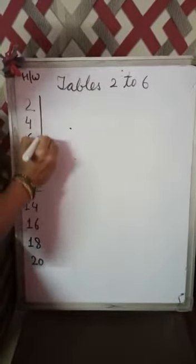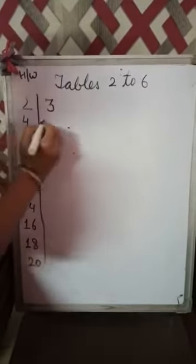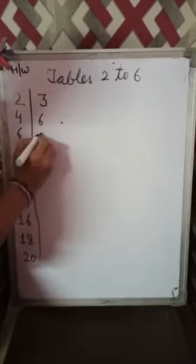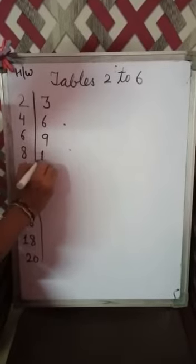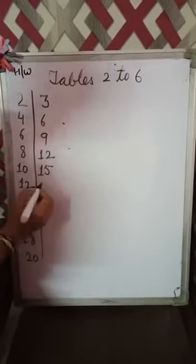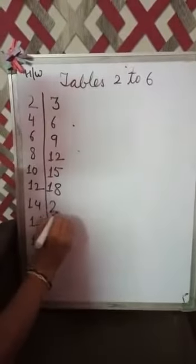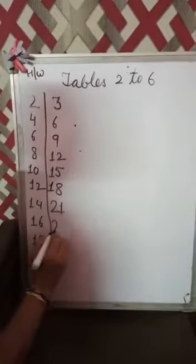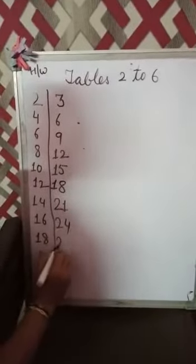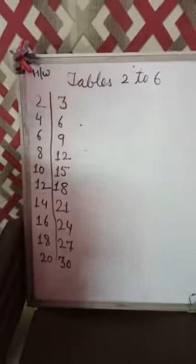Now next table. Table of 3. 3 times 1 is 3. 3 2's are 6. 3 3's are 9. 3 4's are 12. 3 5's are 15. 3 6's are 18. 3 7's are 21. 3 8's are 24. 3 9's are 27. 3 10's are 30.